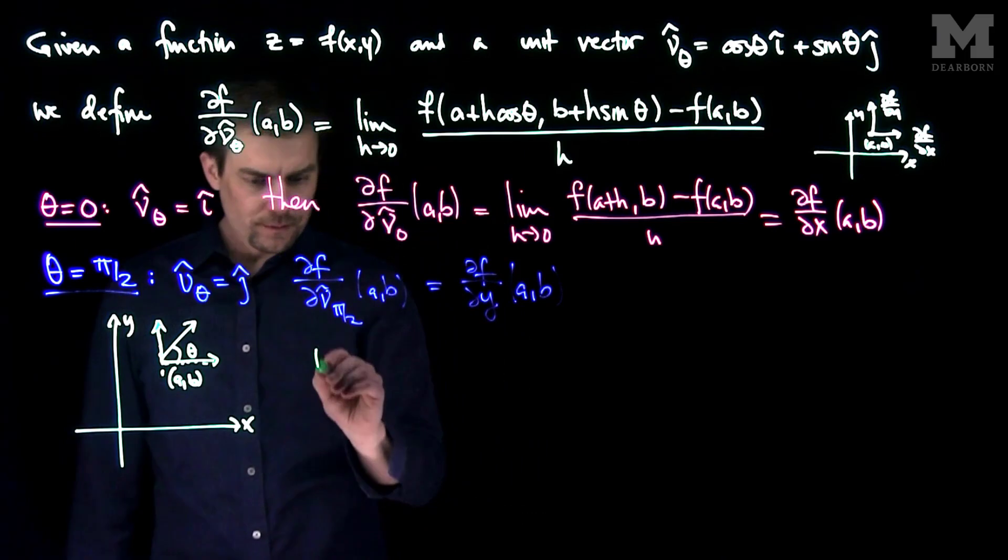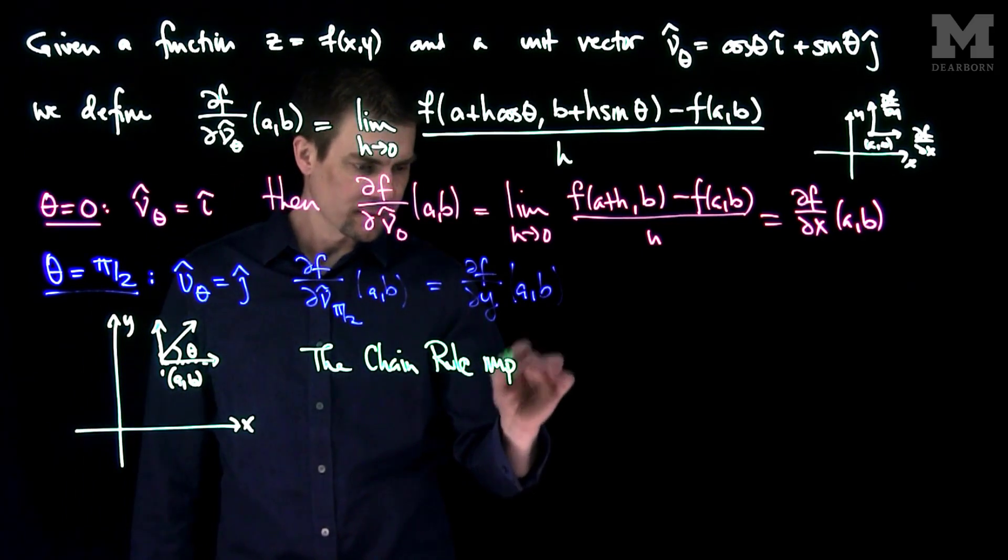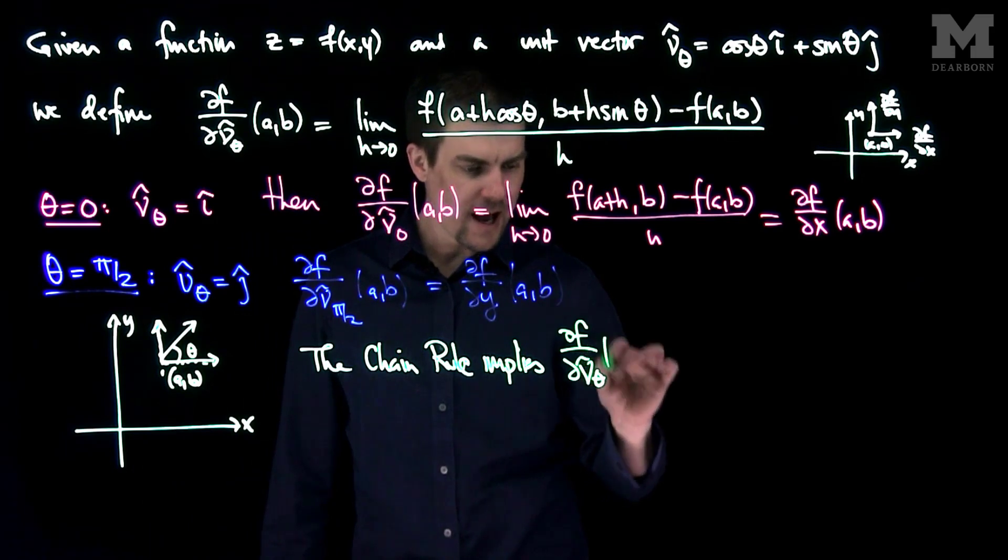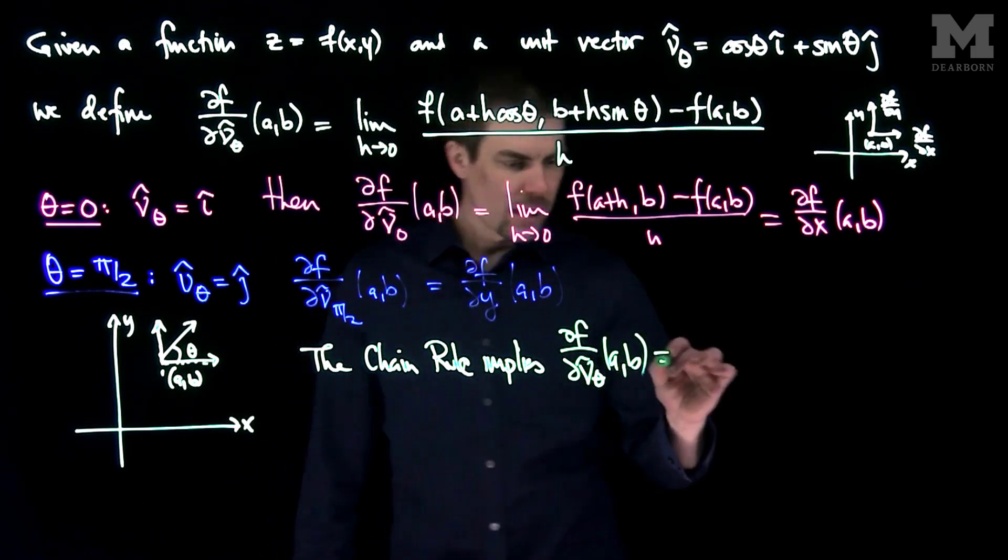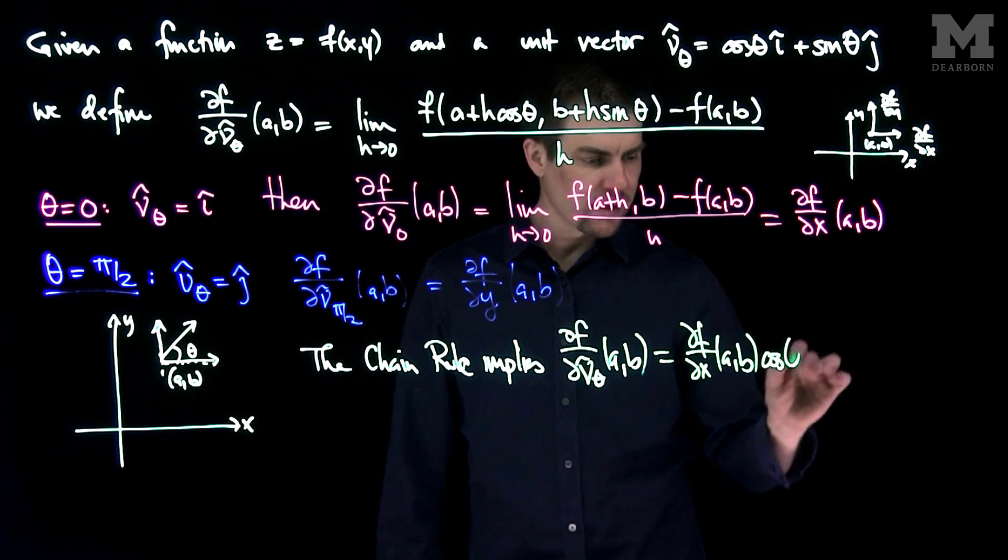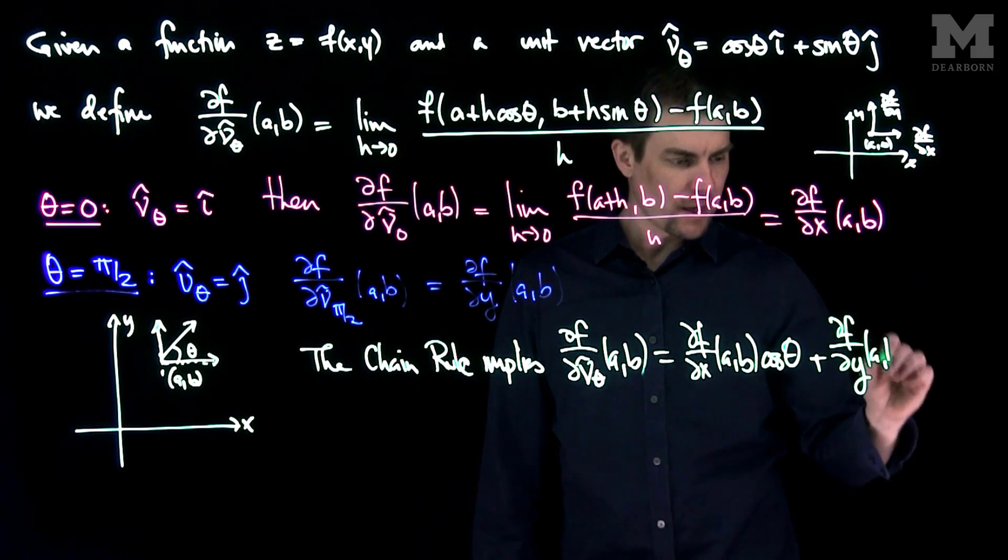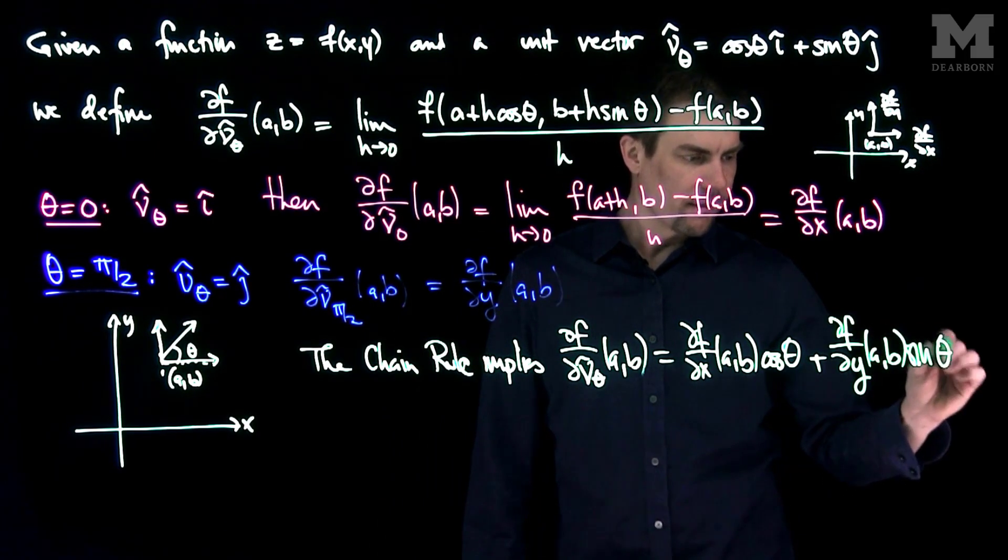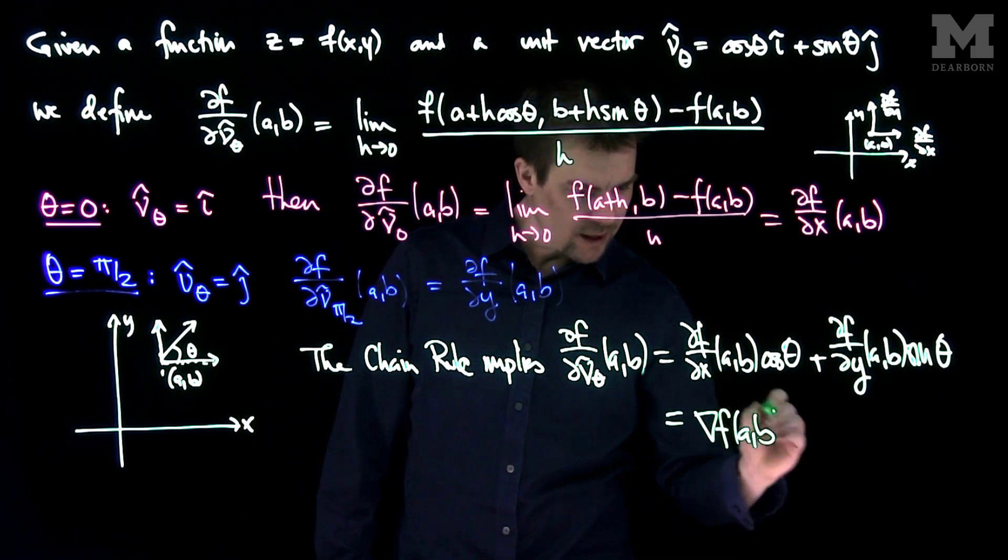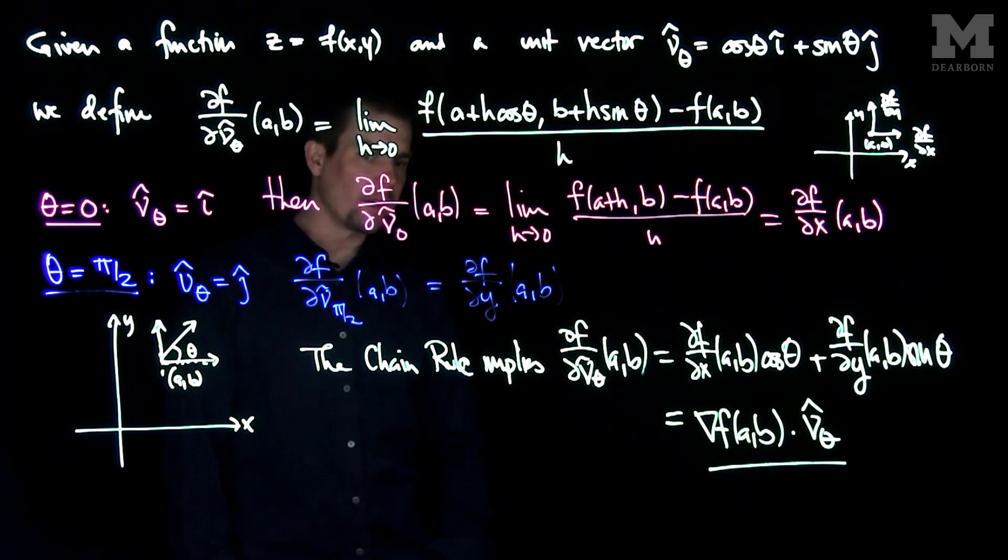Now by the chain rule, the chain rule implies that partial f partial nu theta hat at ab is partial f partial x at ab times the cosine of theta, plus partial f partial y at ab times the sine of theta, or we can write this as the gradient of f at ab dot the vector nu hat of theta. And that's typically how we compute these directional derivatives.